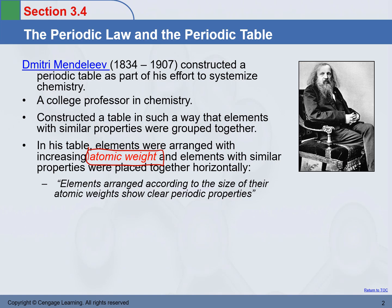Luckily, usually when atomic number increases, atomic weight also increases, so it was not a big issue for him to make the table work. He arranged the elements with increasing atomic weight, and elements with similar chemical properties were placed together horizontally. That's another difference — the current table groups elements vertically. He claimed: elements arranged according to the size of atomic weight show clear periodic properties.